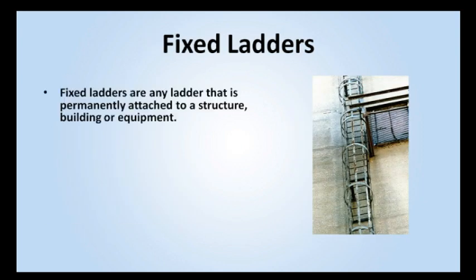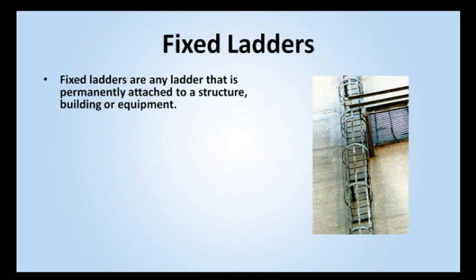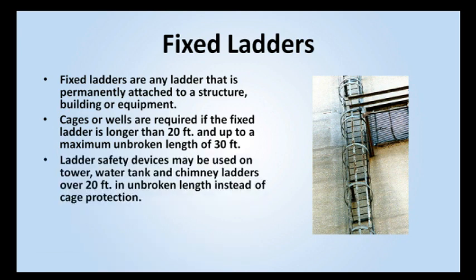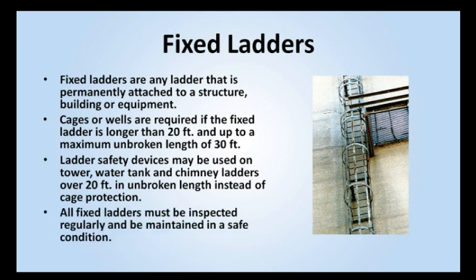Fixed ladders are any ladder that is permanently attached to a structure, building, or equipment. Cages or wells are required if the fixed ladder is longer than 20 feet and up to a maximum unbroken length of 30 feet. Ladder safety devices may be used on tower, water tank, and chimney ladders over 20 feet in unbroken length, instead of cage protection. All fixed ladders must be inspected regularly and be maintained in a safe condition.